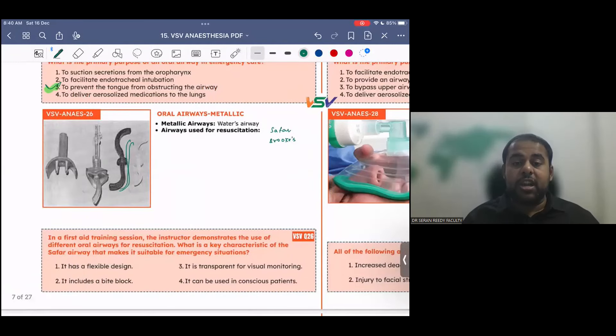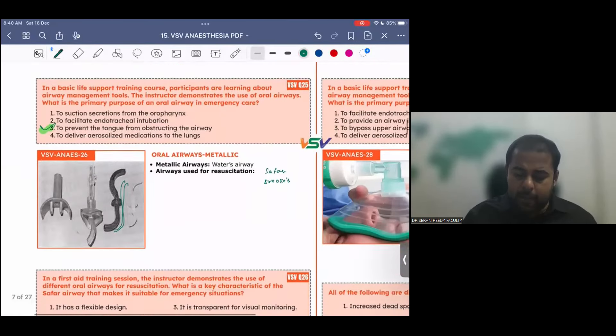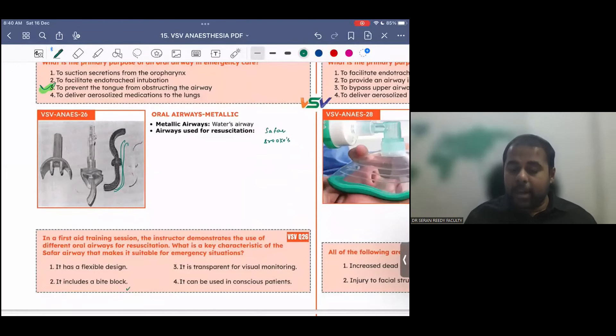In a first aid training session, the instructor demonstrates the use of different oral airways for resuscitation. What is the key characteristic of the Suffer airway that makes it suitable for emergency situation? It has a flexible design. It includes a bite block. It is transparent for visual monitoring. It can be used in conscious patients. It's always picking up the most appropriate answer. These are the best answers among the options available.